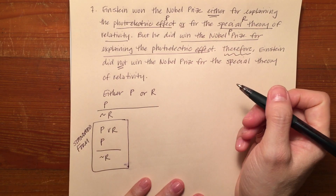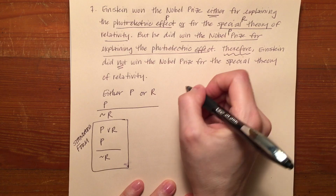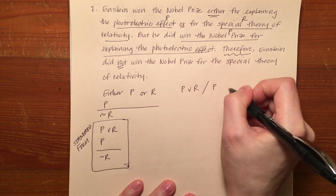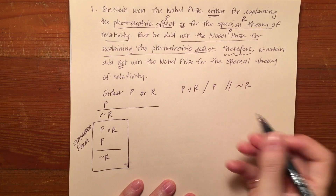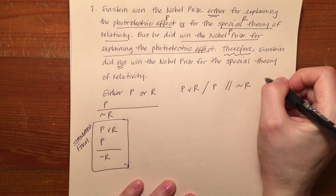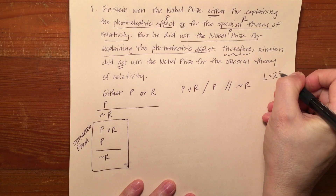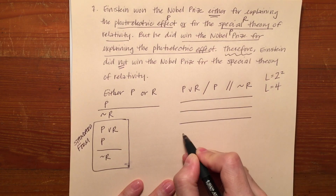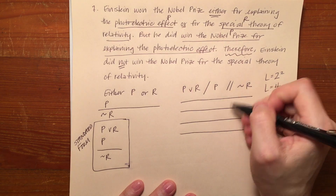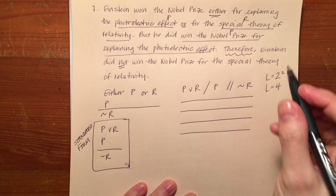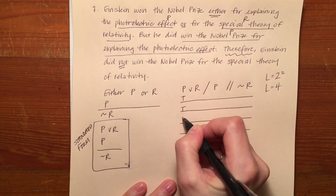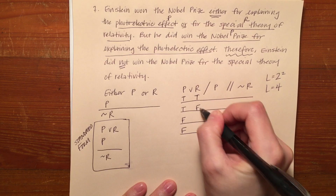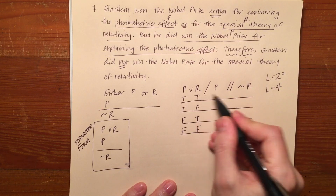If I quickly work out a truth table for this argument, it would look like this: P or R (one slash), P (double slash), not R. We have an example with only two letters, so my number of lines is four. I've got two trues and two falses in my first letter from the left, and one true and one false for my second letter, and I carry those over.